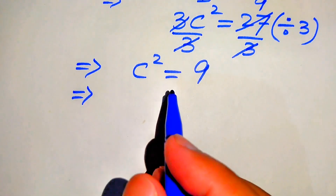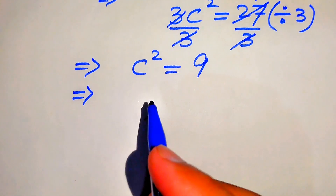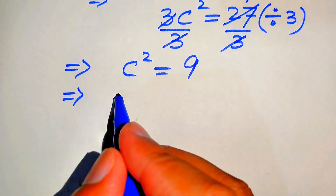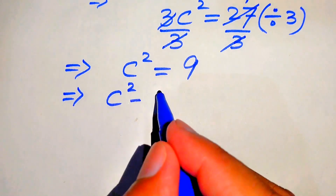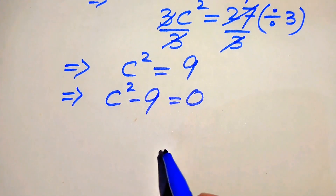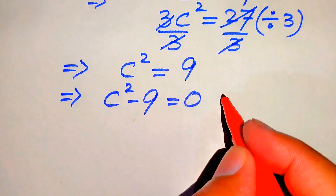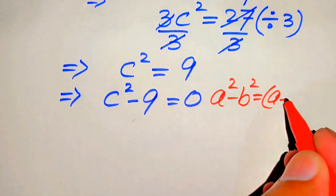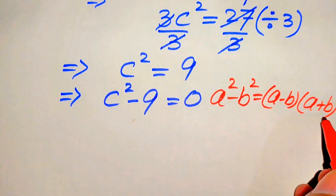Now in the next step we have two ways to solve this problem. First, we take a square root on both sides. The second method is we apply the algebraic formula. Here we move 9 to the left hand side, so it becomes C squared minus 9 equals 0, and we apply the algebraic formula: A squared minus B squared equals A minus B times A plus B.